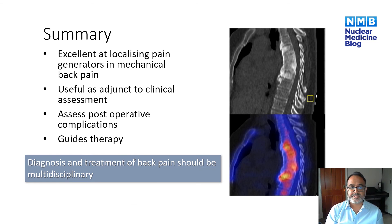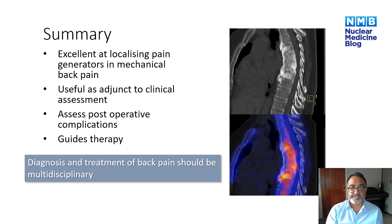In summary, SPECT CT is excellent at localizing pain generators in mechanical back pain. It is a useful adjunct to clinical assessment and is very useful in assessing post-operative complications. It can guide therapy by directing the surgeon to which facet joint and level needs to be operated on, and can determine whether joint injections are going to be successful based on the intensity of uptake. We must remember that the diagnosis and treatment of back pain is multidisciplinary, and often a conservative approach and physiotherapy is what's needed. Identifying patients who would not benefit from treatment is almost as useful as identifying those who would.